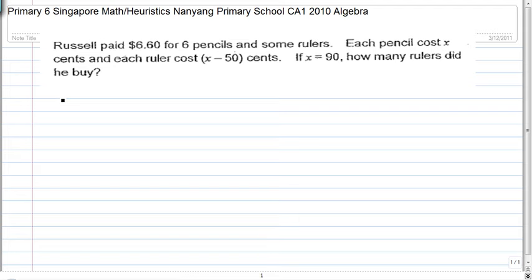Russell paid $6.60 for 6 pencils and some rulers. Each pencil cost X cents and each ruler cost X minus 50 cents. If X equals 90, how many rulers did he buy? So one pencil cost X cents.